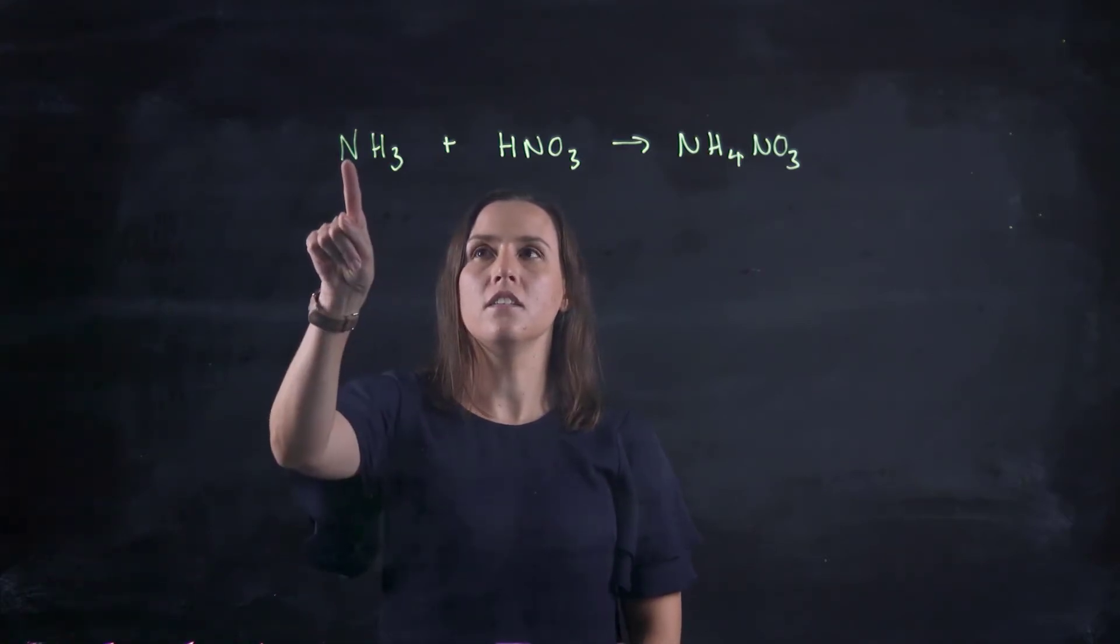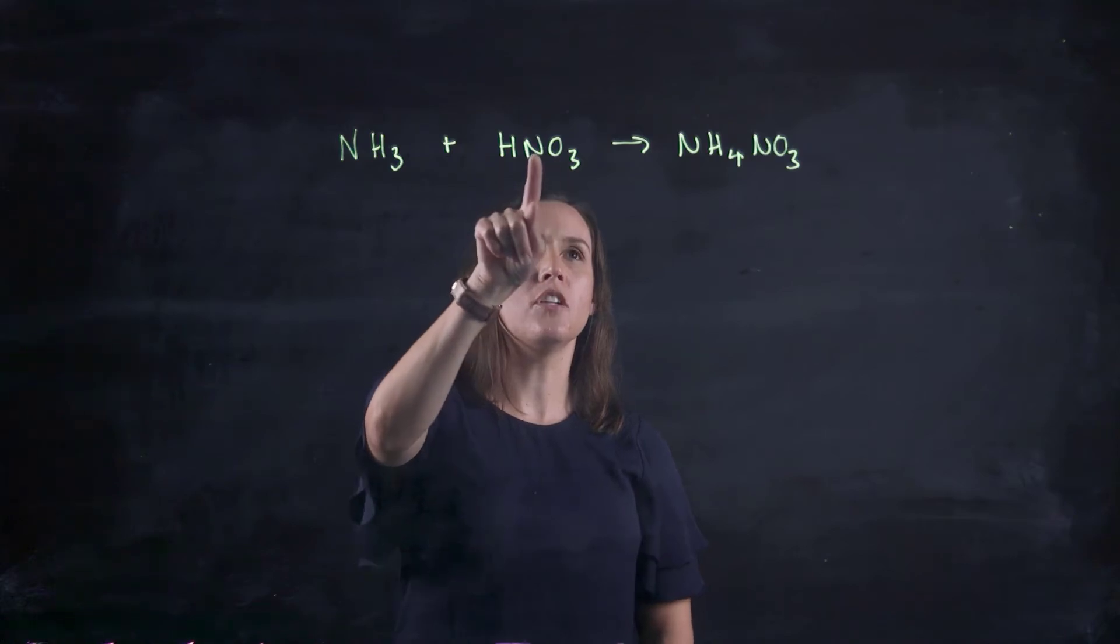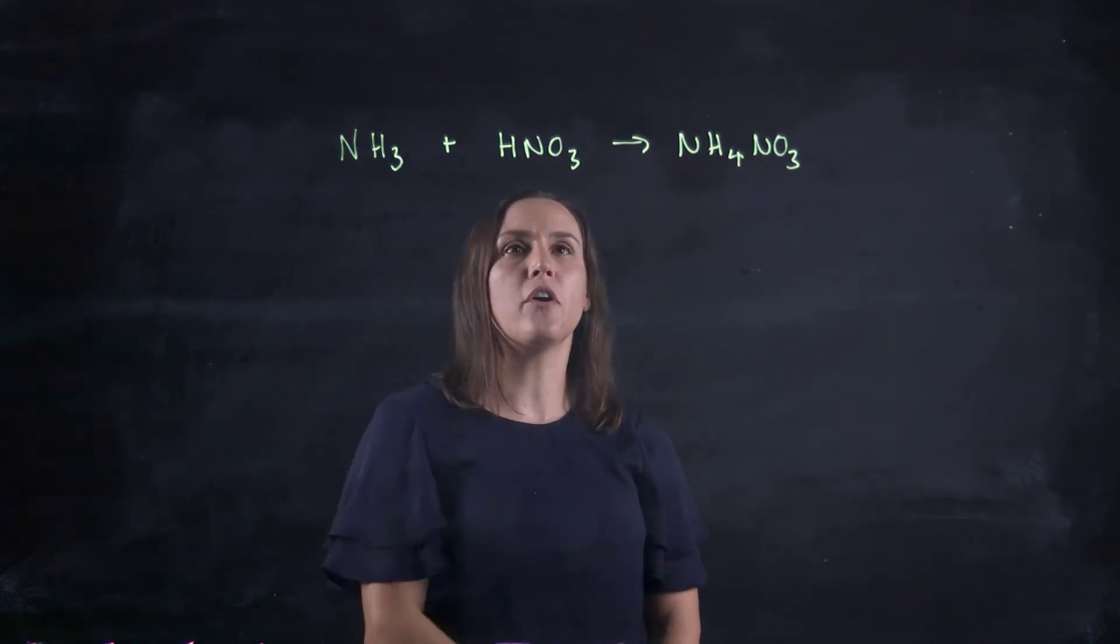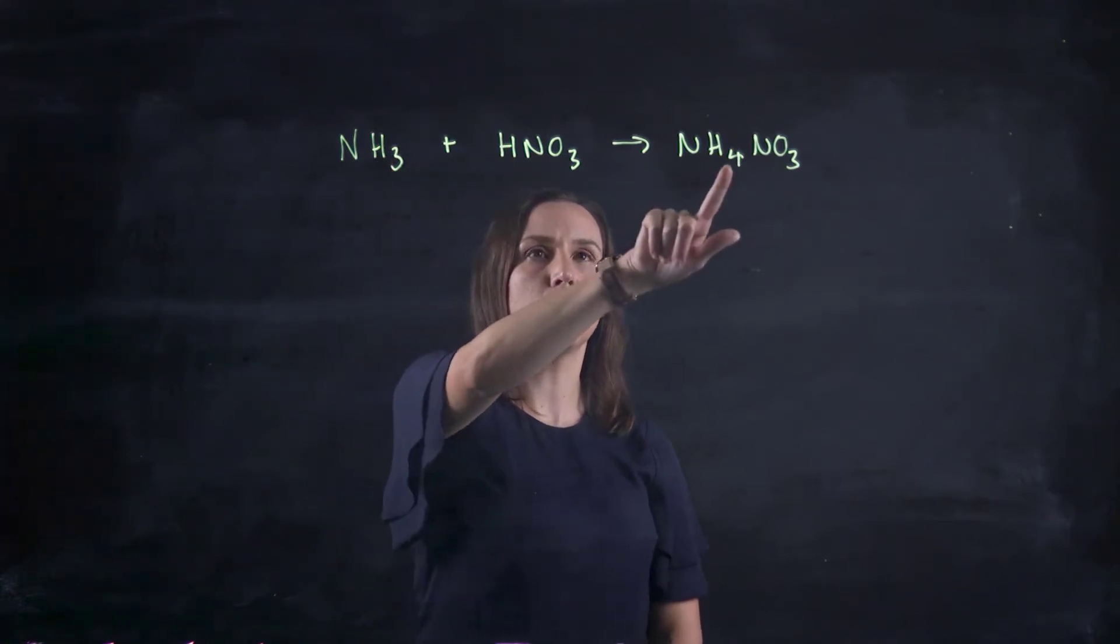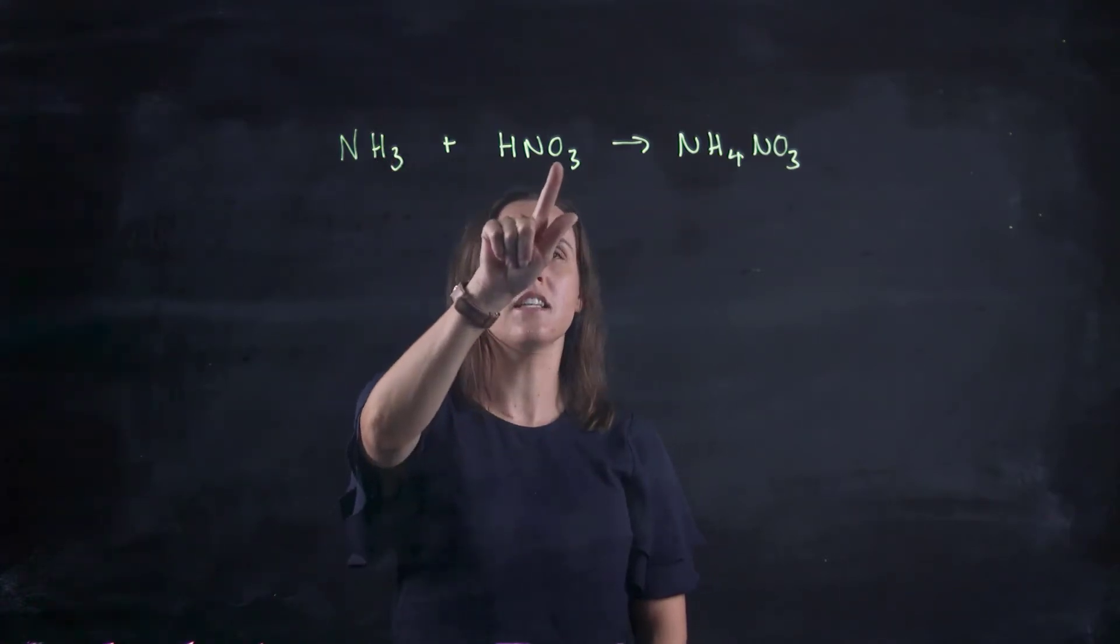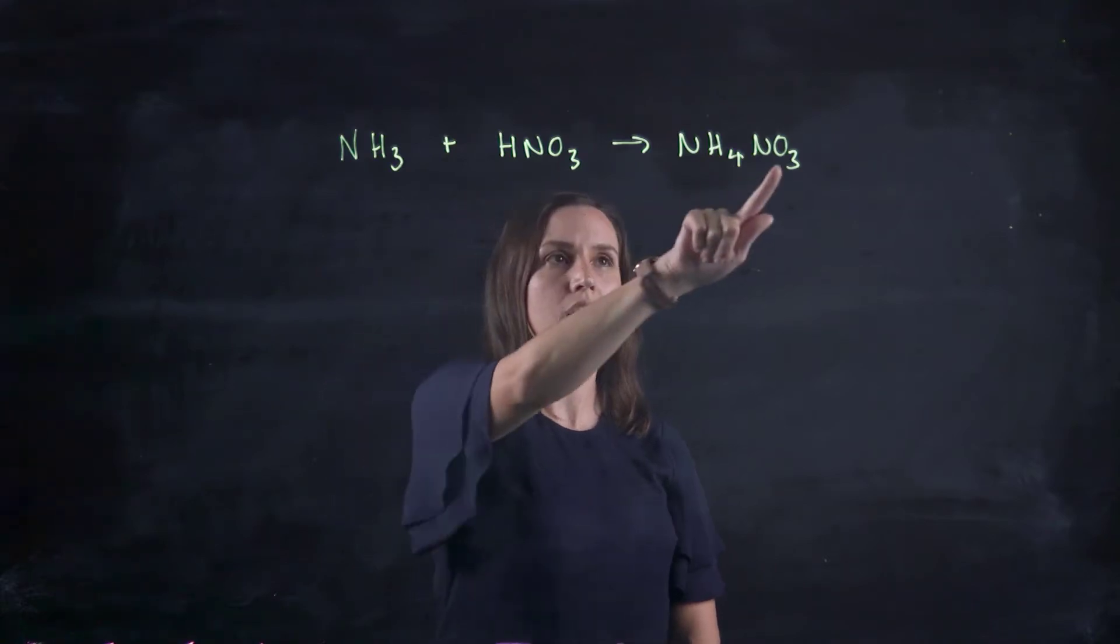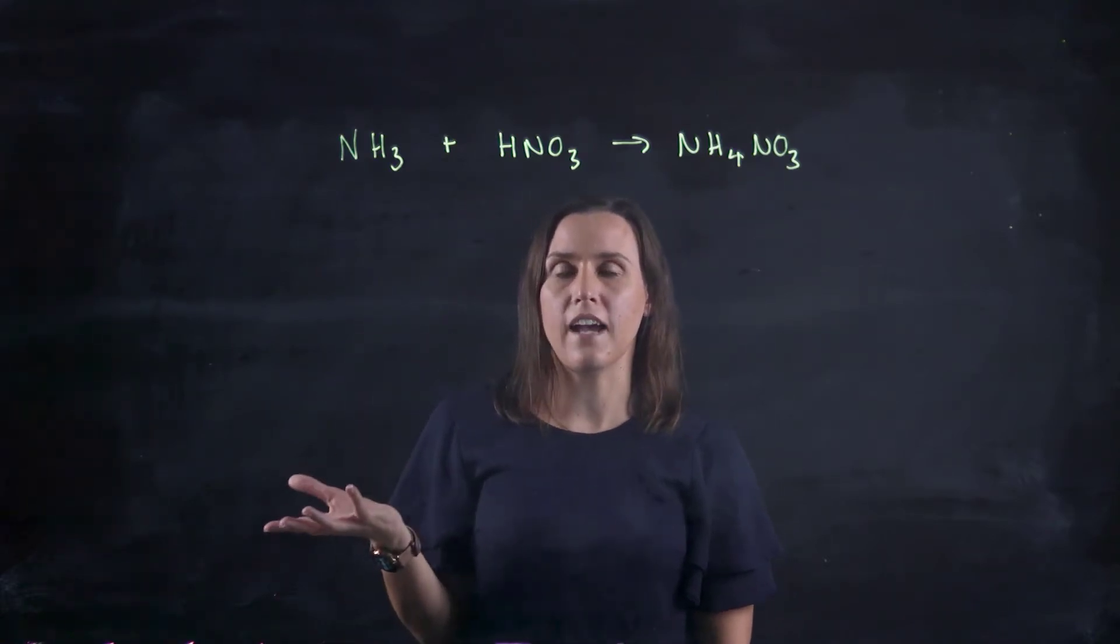So I've got one nitrogen, two nitrogens. I've got one, two on the product side. So that's good. Hydrogens, I've got three, four, I've got four. So that's good. And lastly, oxygens, I've got three, and I've got three. So this is a balanced reaction.